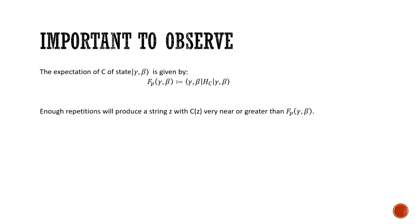Here it's important to observe that for any expectation value of the cost function is given by F(gamma, beta), which is basically the state vector of gamma, beta, the cost Hamiltonian, and again the state vector of gamma, beta. With enough repetition, we can produce a string z with C(z) which is near or greater than F_p, or we can reach a maximum value of F_p for certain angles gamma and beta.